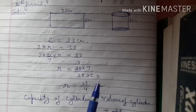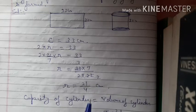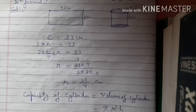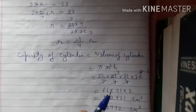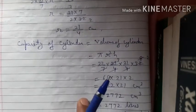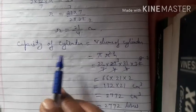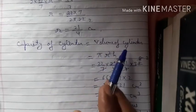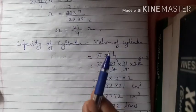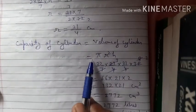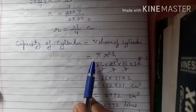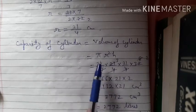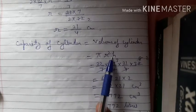So the radius of the cylinder formed is 21/4 cm. Now we need to find the capacity. The capacity of a cylinder equals the volume of the cylinder, and the formula for volume of a cylinder is πr²h.